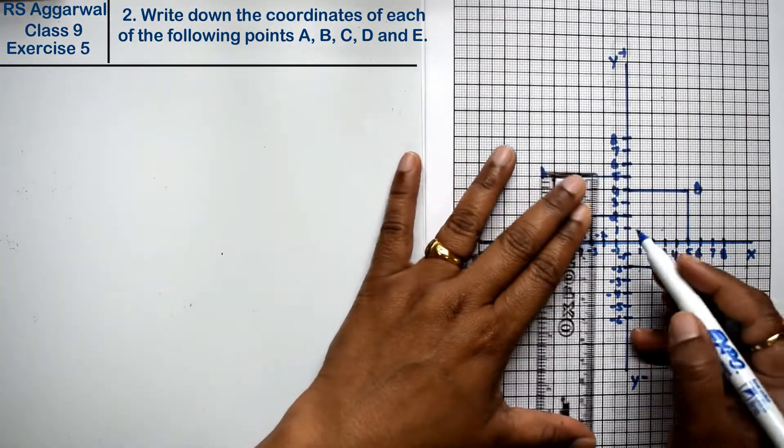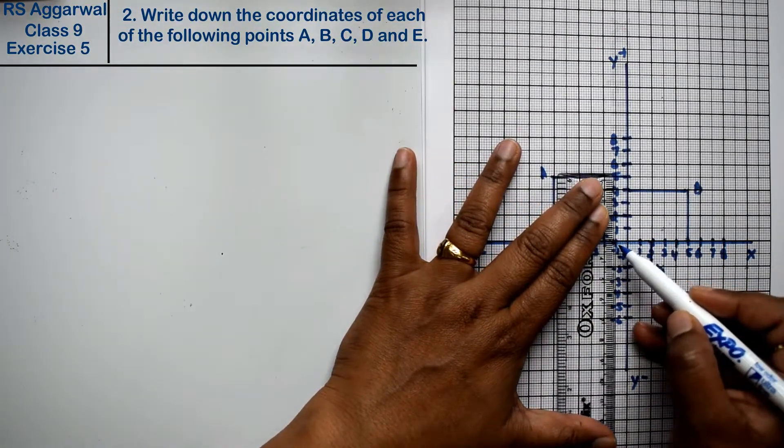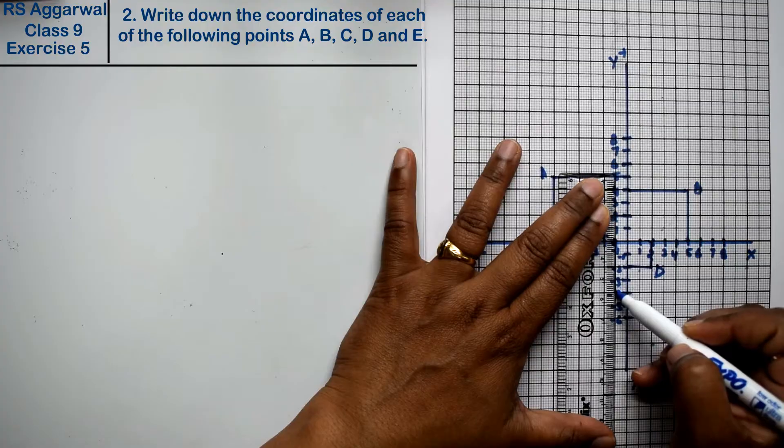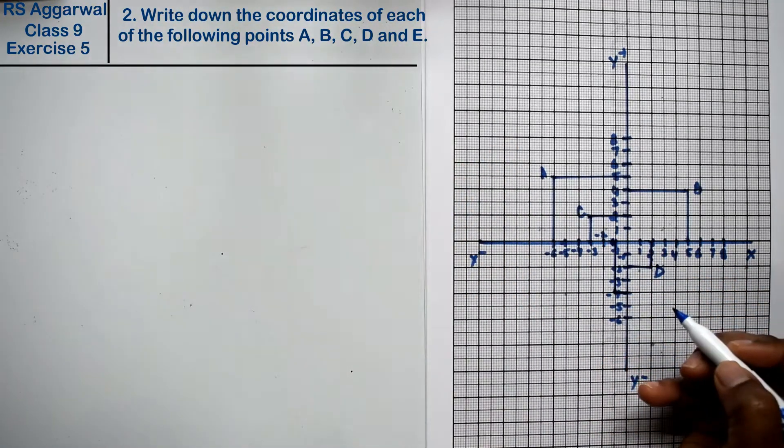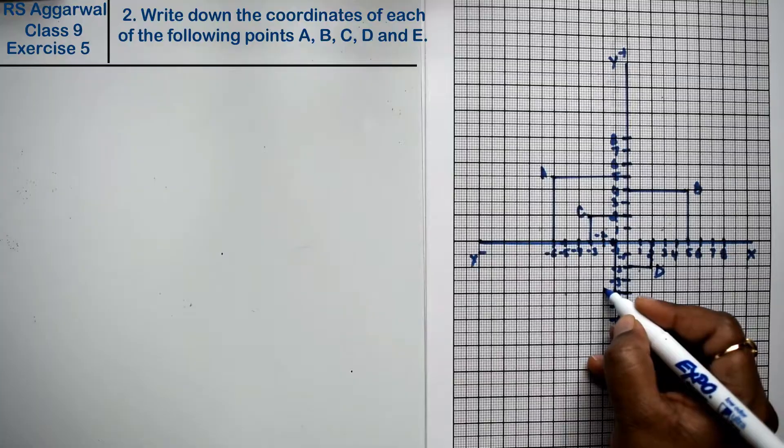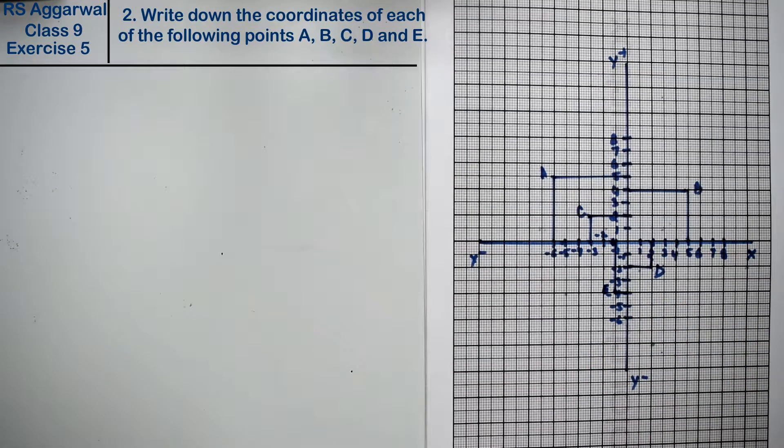And D point, this is our D point, and E point. This is the E point. Now let's remove the coordinates of it.